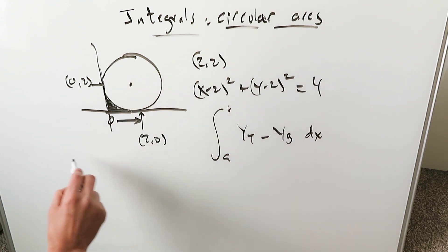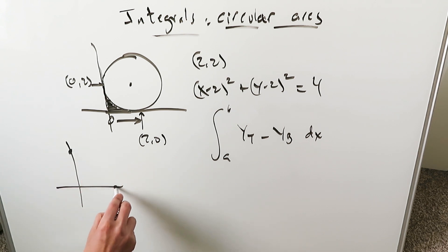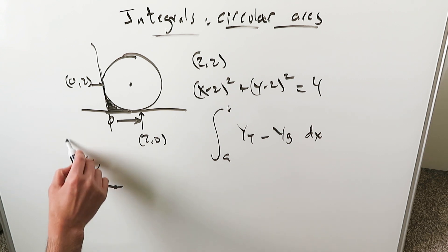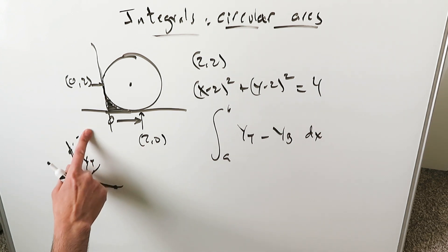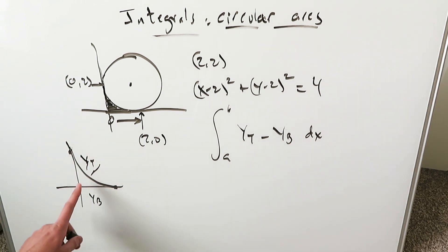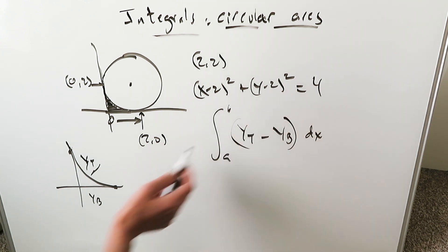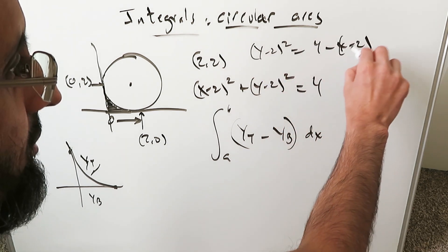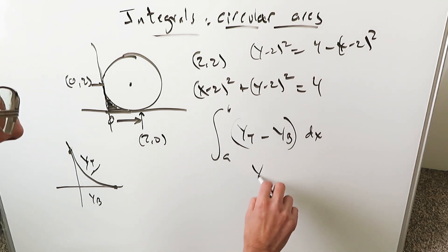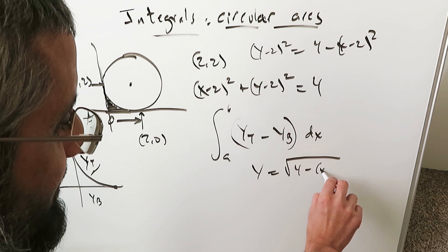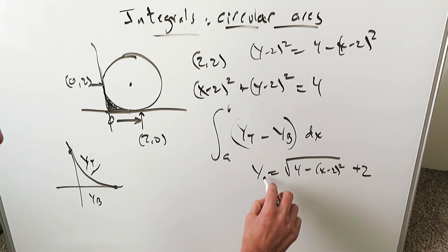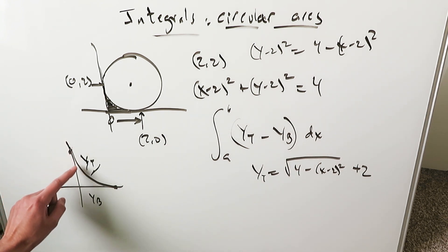You have a top boundary curve. Here's my 0 comma 2 and 2 comma 0. My top boundary curve is part of the circular arc, and my lower boundary curve is the x-axis. The frequently made mistake concerns the equation of this circle. When doing an integral with dx, you solve for y: y minus 2 whole square equals 4 minus x minus 2 whole square. Solving for y, you get y equals square root of 4 minus x minus 2 whole square, plus 2.